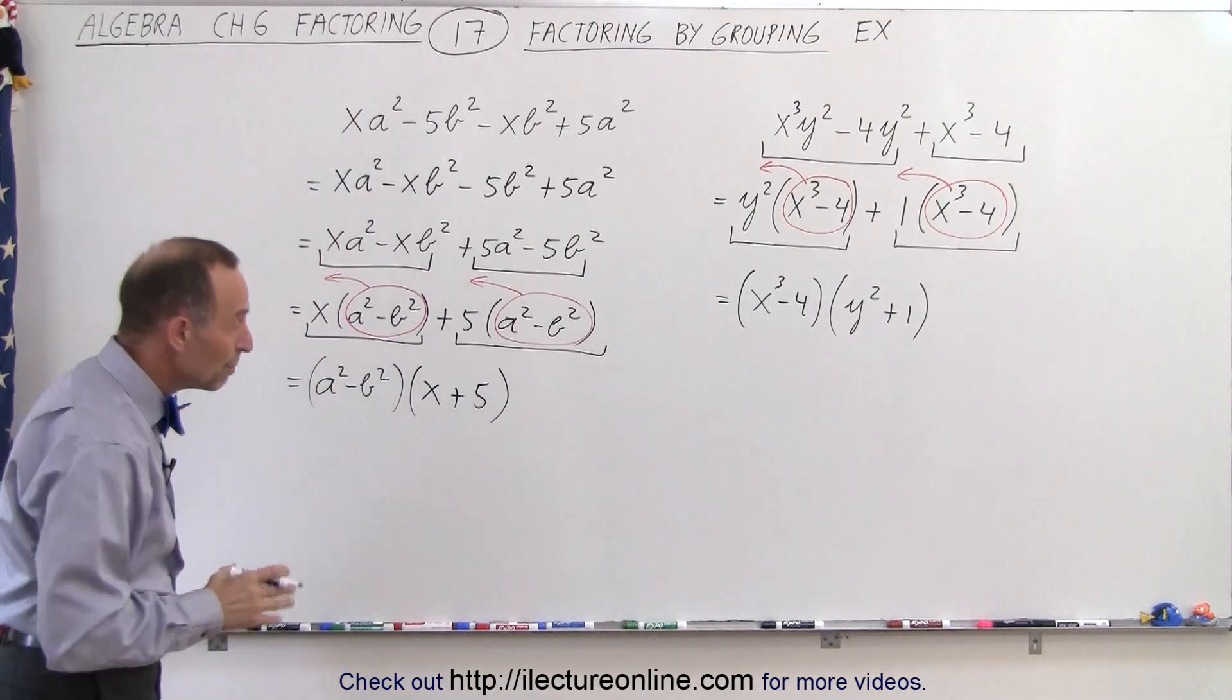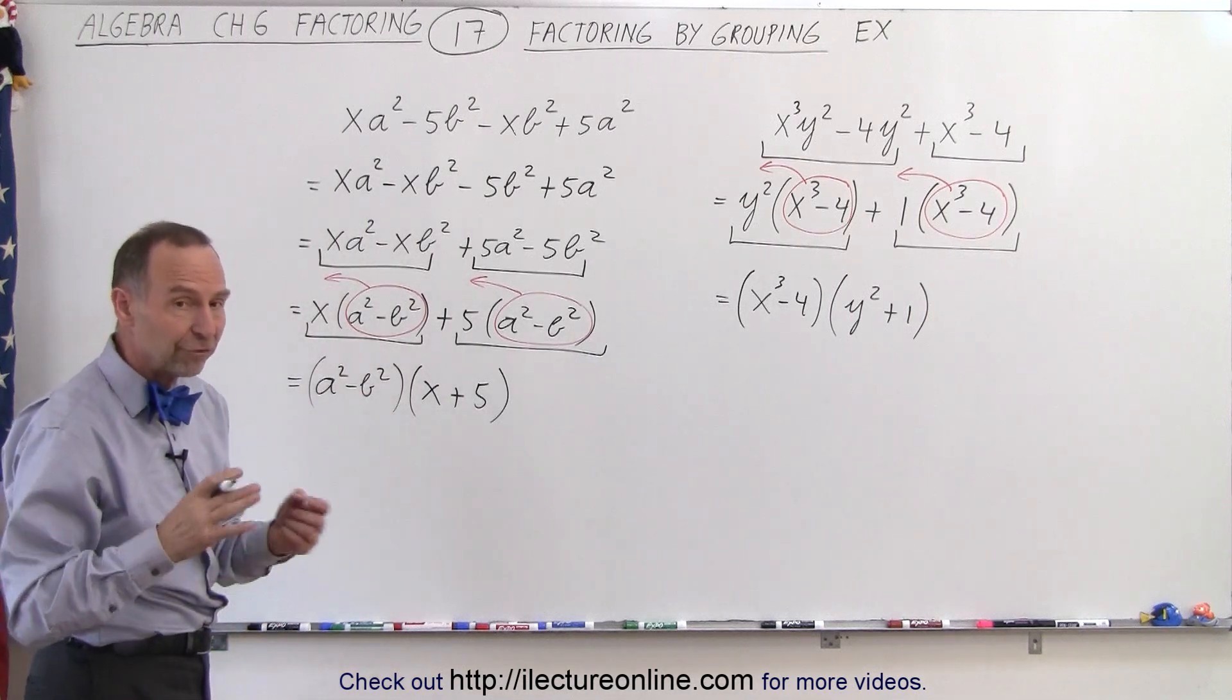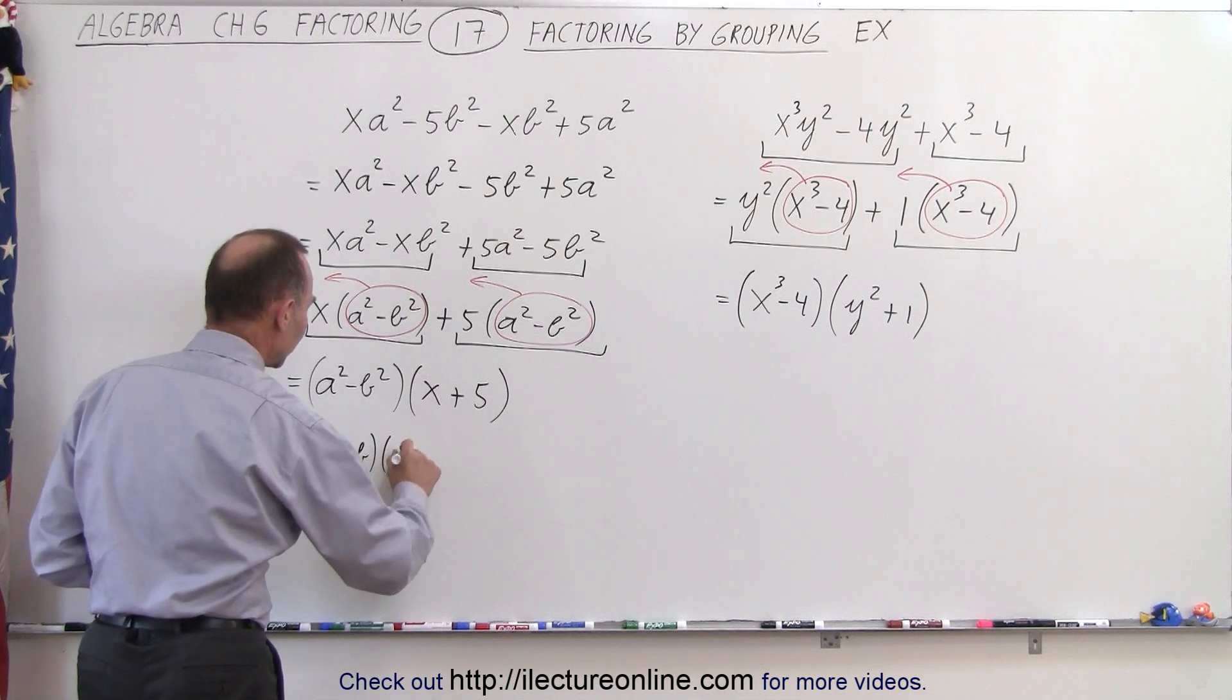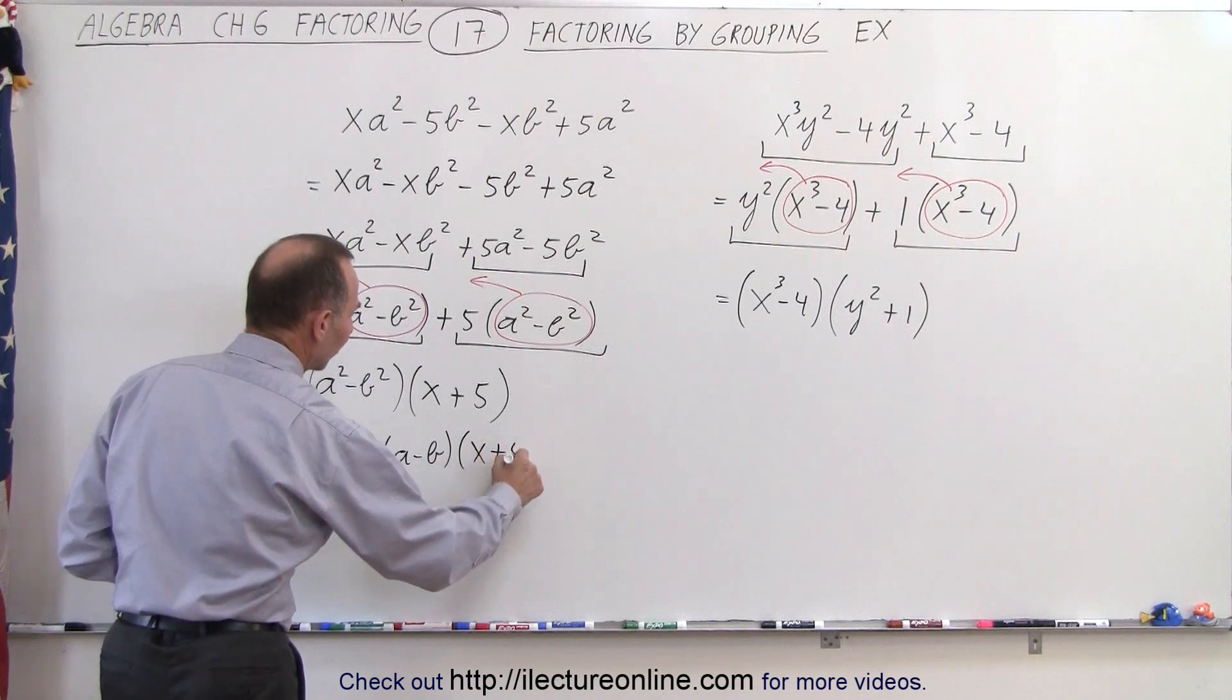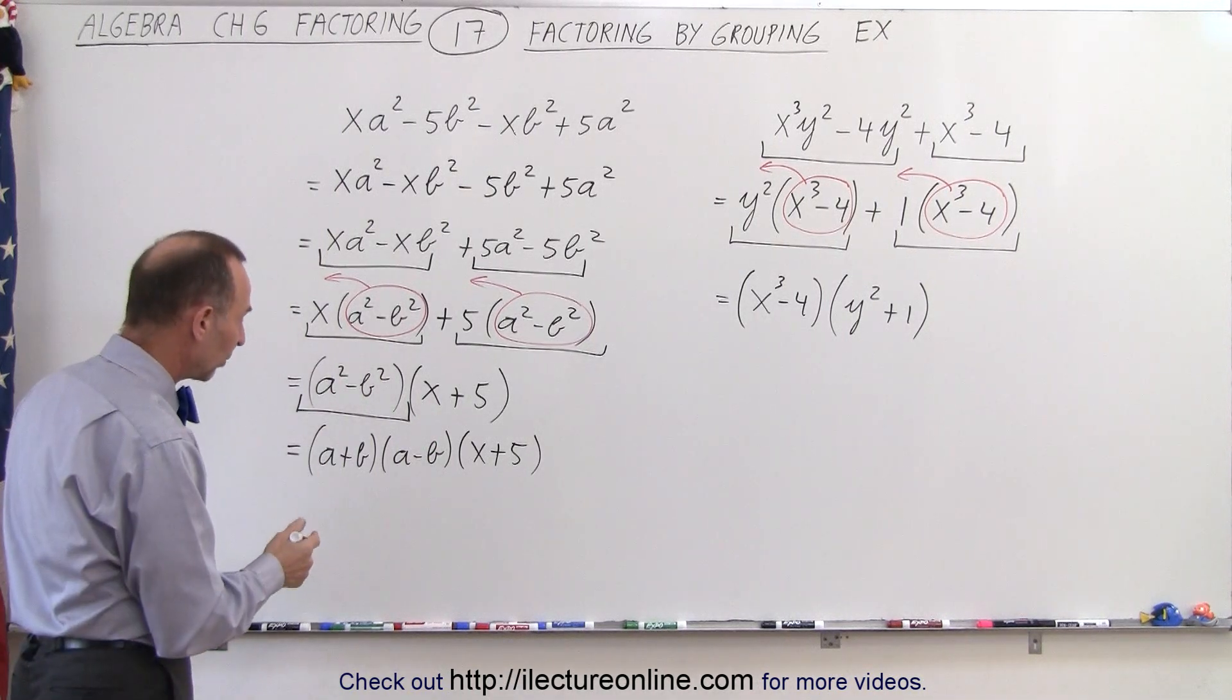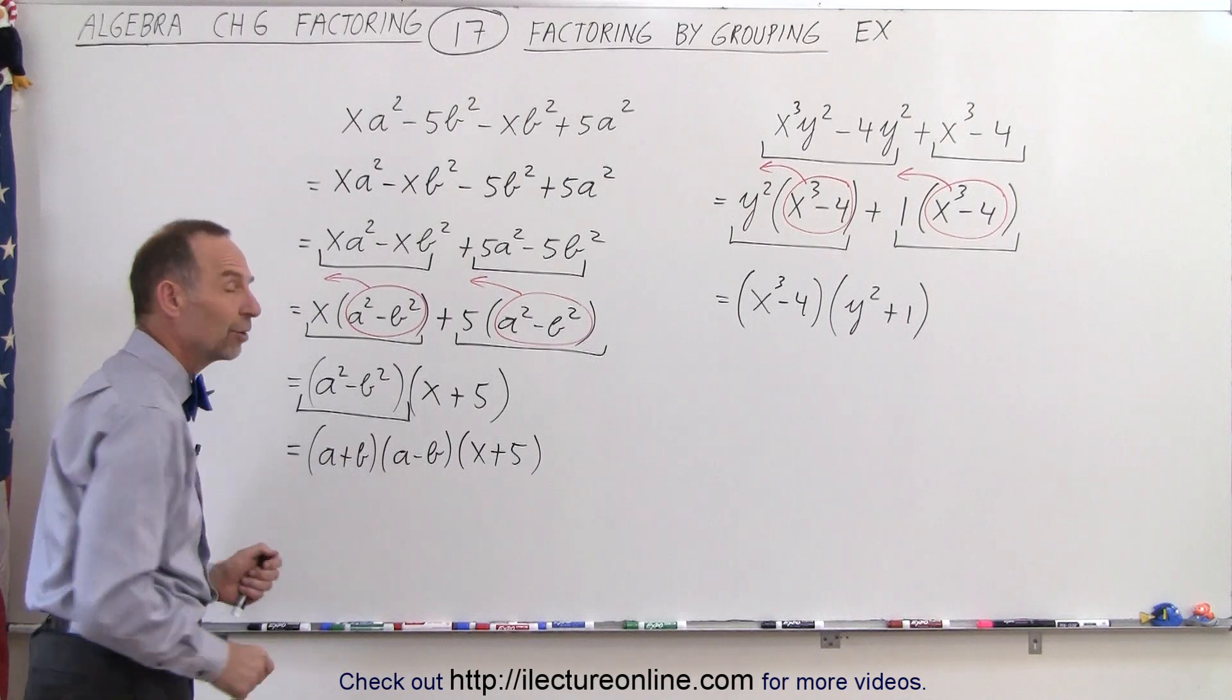Now you may or may not already know how to do that, but when we have the difference of two squares we can actually factor that. We'll show that technique later, but this can be written as a plus b times a minus b times x plus five. So we can actually further factor this binomial. A-square minus b-square is called the difference of squares and it can be written as a plus b times a minus b.